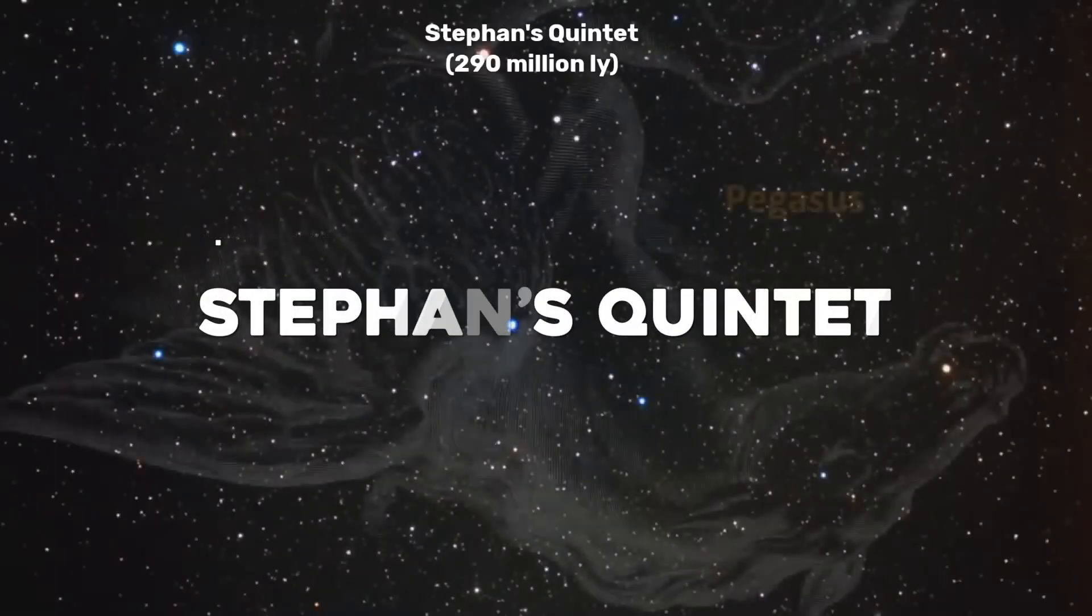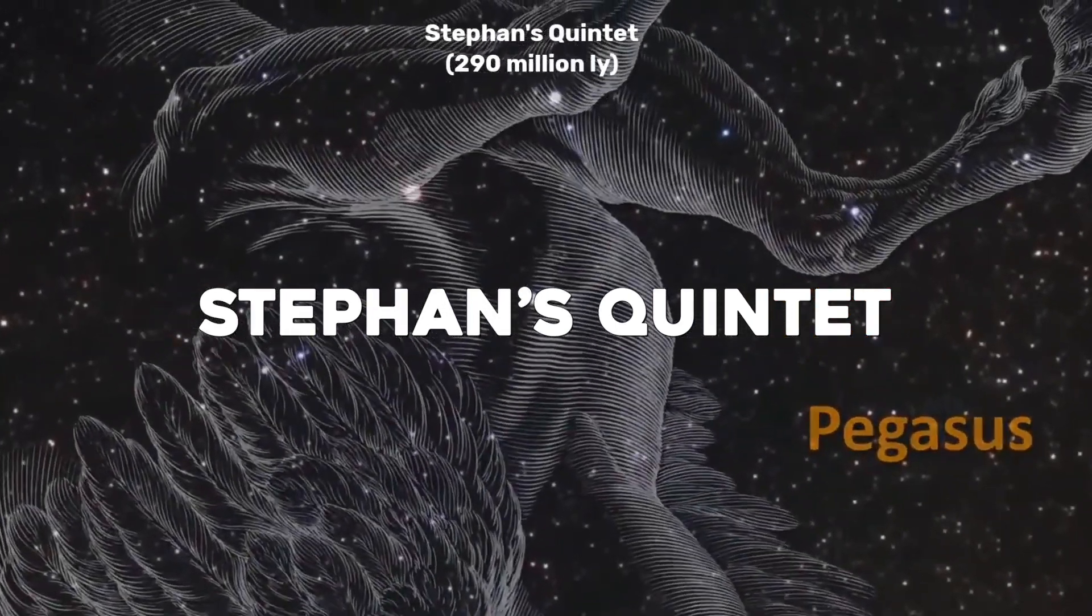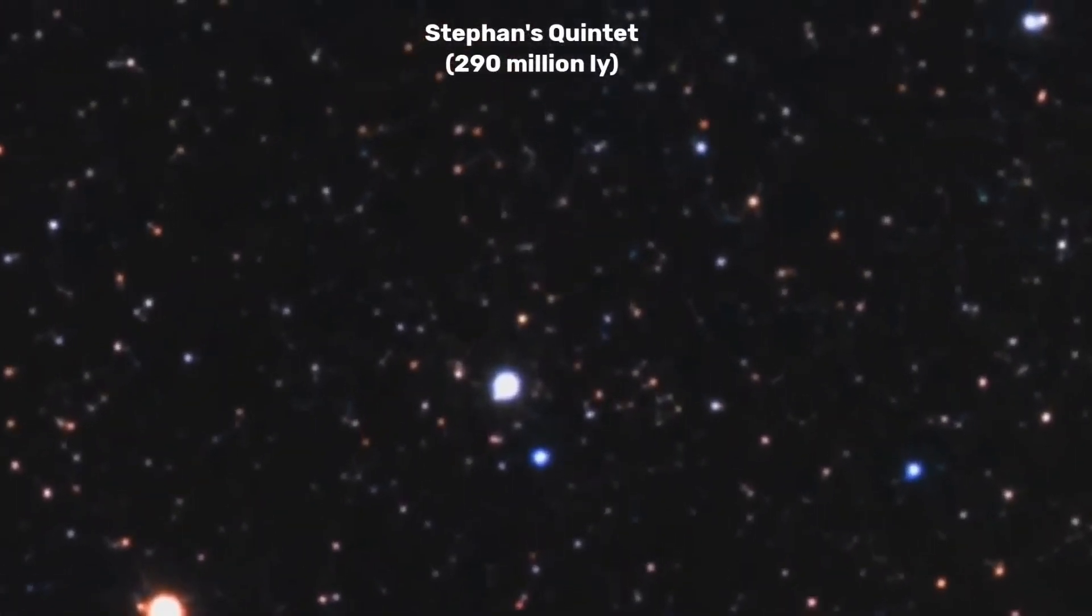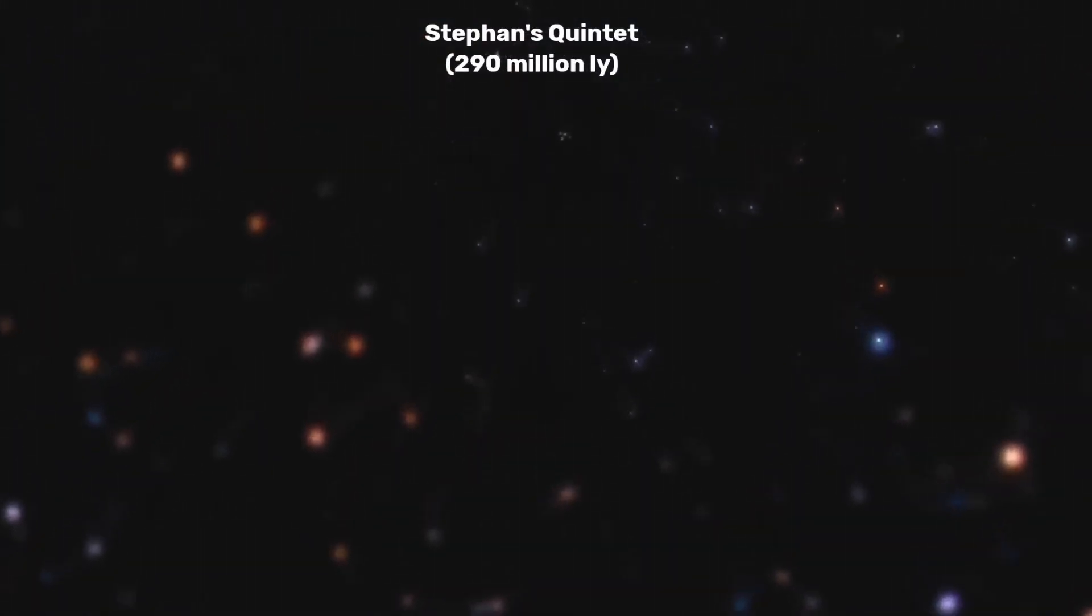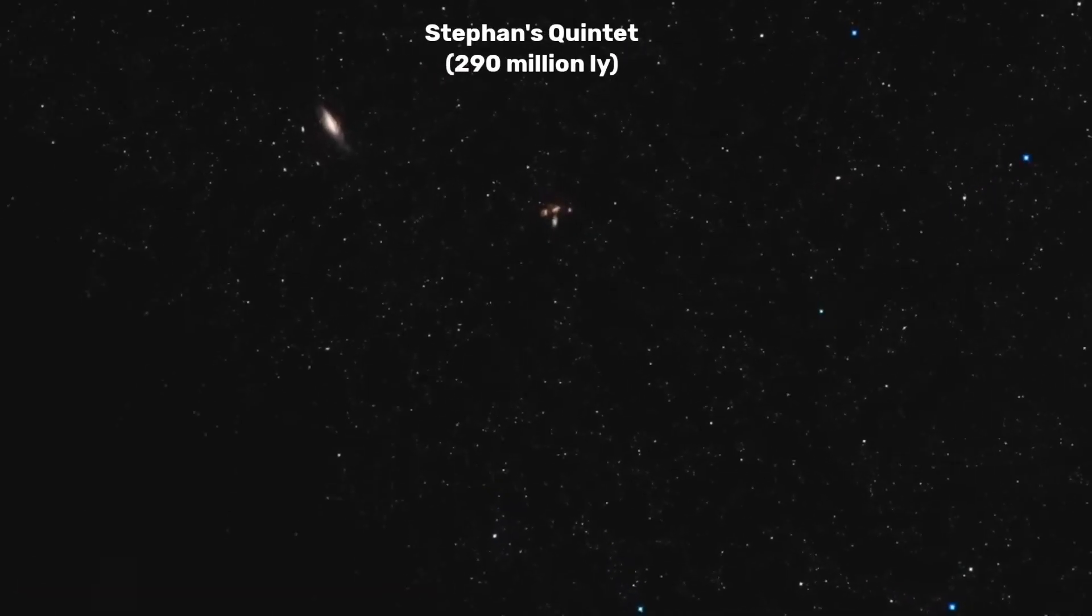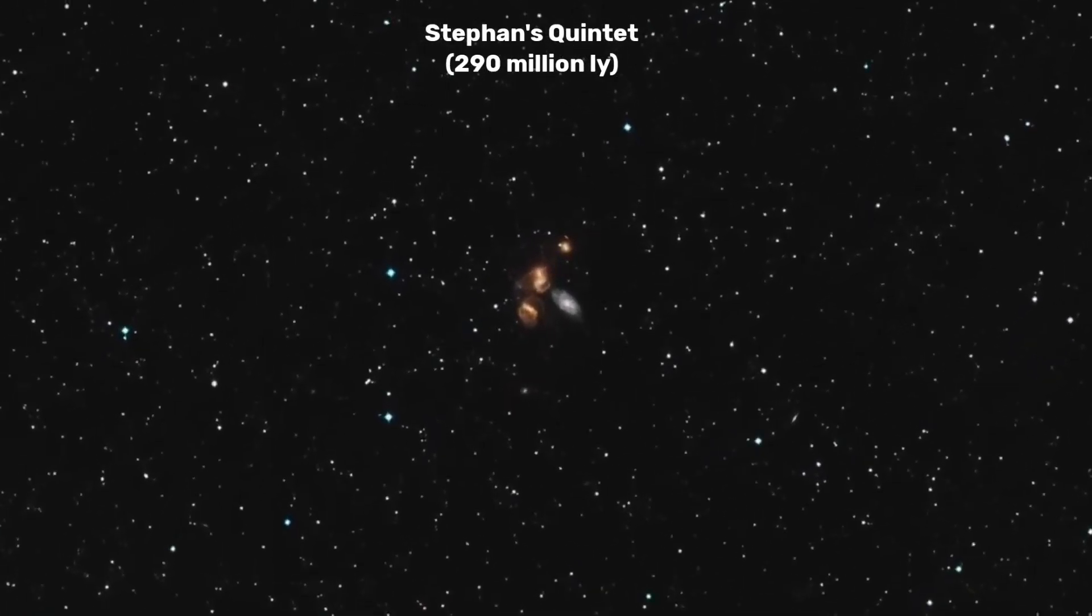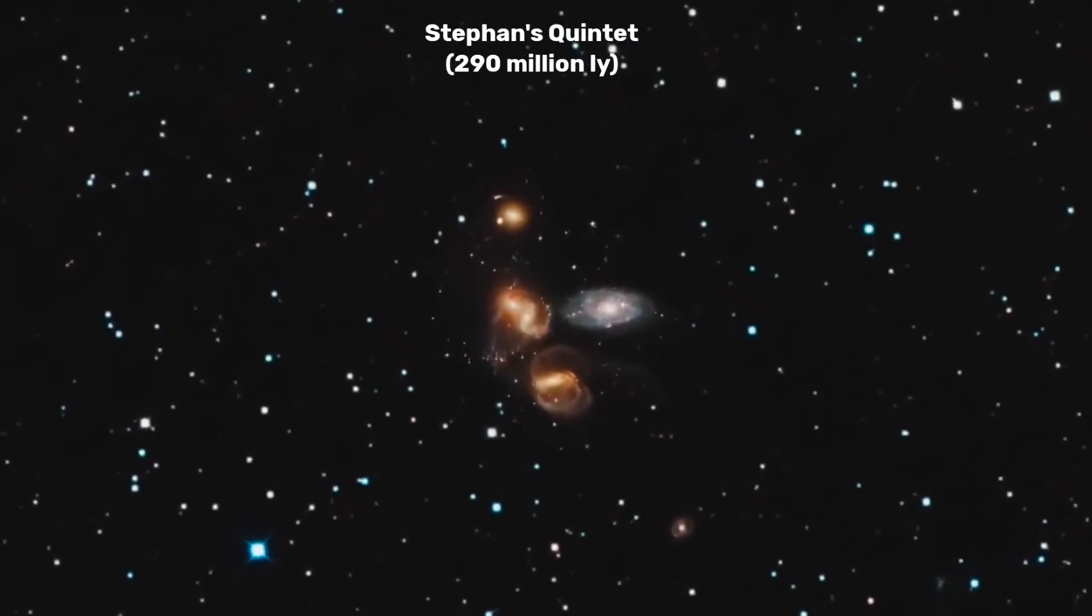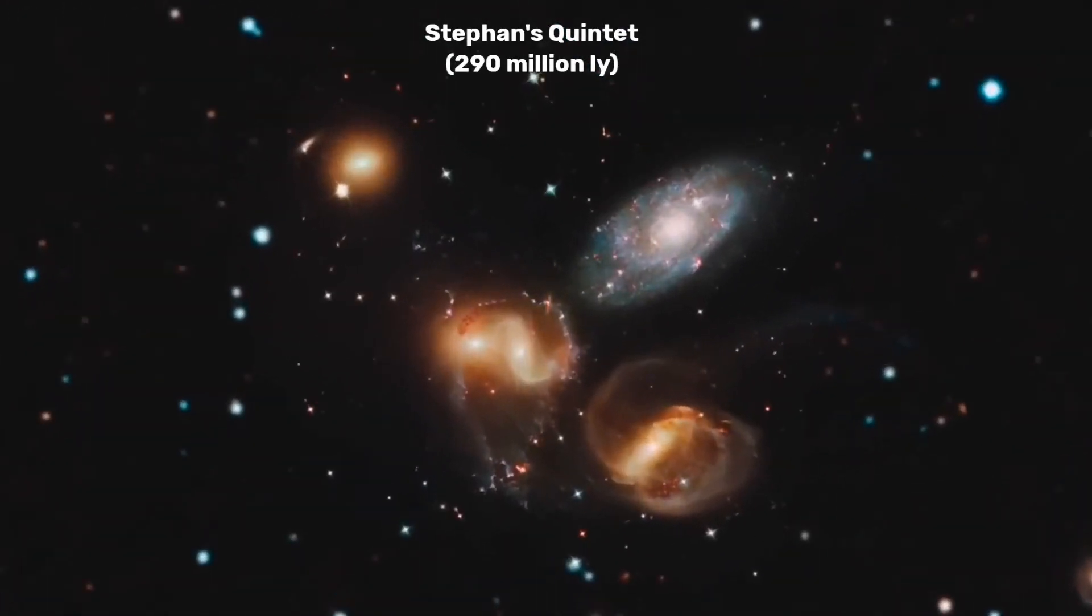Stephan's Quintet. Stephan's Quintet is roughly 290 million light-years away, located within the constellation Pegasus, and it is a visual grouping of five galaxies. Today, the International Webb Telescope reveals Stephan's Quintet in a new light. This enormous mosaic is Webb's largest image to date, covering about one-fifth of the moon's diameter. It contains over 150 million pixels and is constructed from almost 1,000 separate image files.